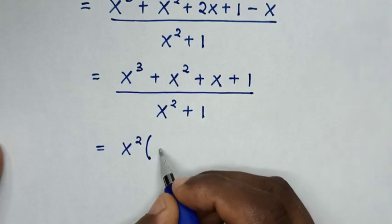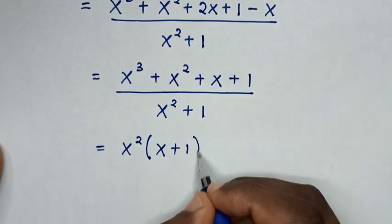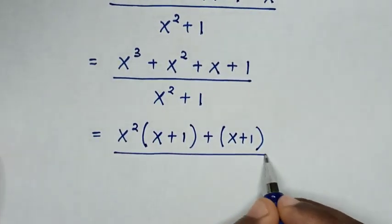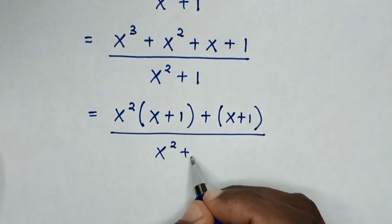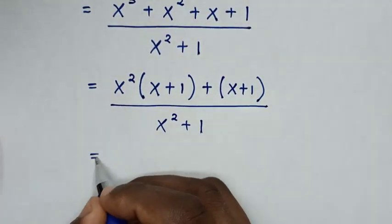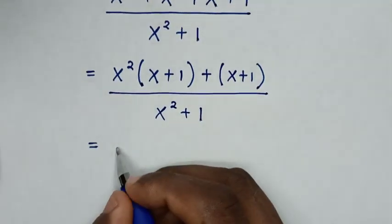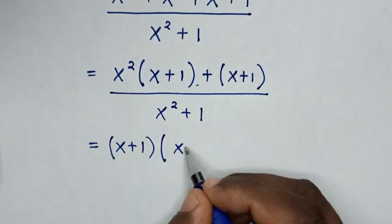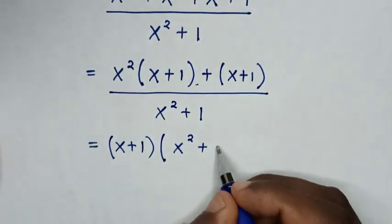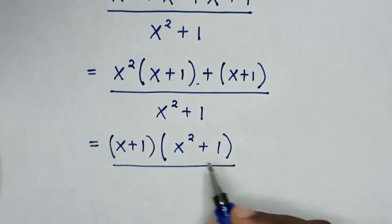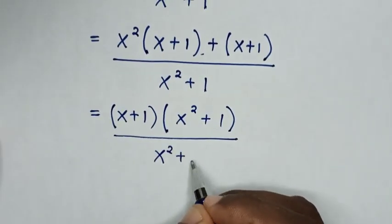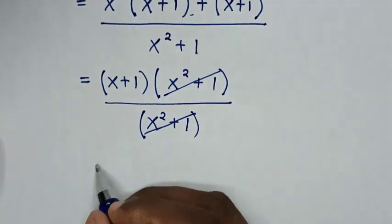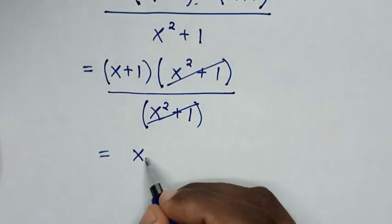So take out of bracket: x squared times (x plus 1), plus x squared plus 1, plus (x plus 1), all over x squared plus 1. Then x plus 1 is common, so take (x plus 1) out of bracket. Then (x plus 1) times (x squared plus 1), and the (x squared plus 1) will cancel each other. So it will be equal to x plus 1.